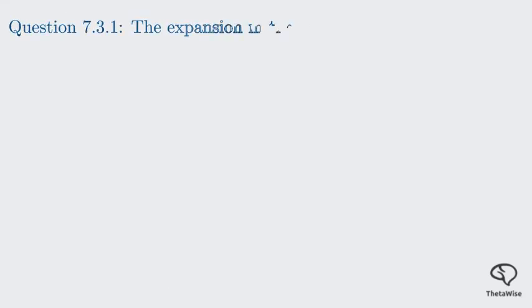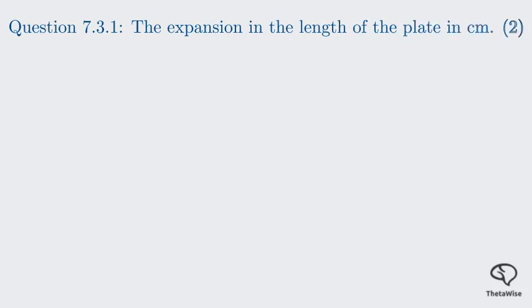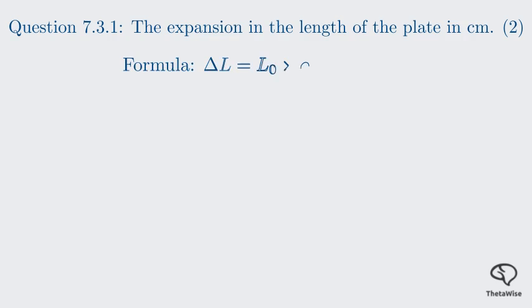Sub-question 7.3.1 asks for the expansion in the length of the plate in centimeters. This is a question about linear expansion. The formula is: delta L equals the original length L₀, multiplied by the coefficient of linear expansion alpha, multiplied by the change in temperature T₂ minus T₁. This formula tells us how much a material will expand in one dimension when heated.